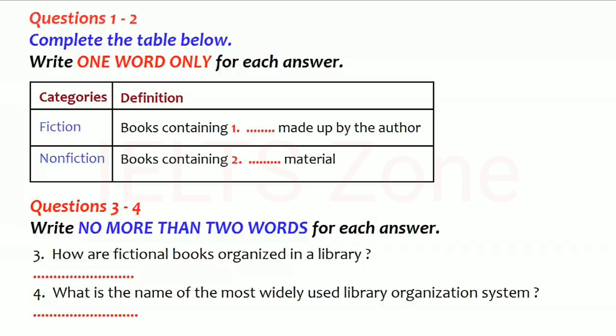All libraries are organised in much the same way. Every library houses a collection of books. Many libraries also have periodicals, films and records. All the books in a library can be classified under two main categories: fiction and non-fiction.